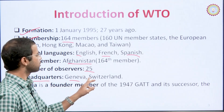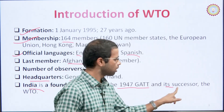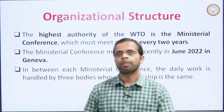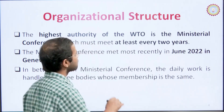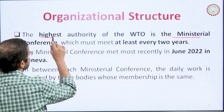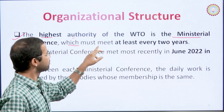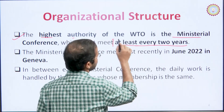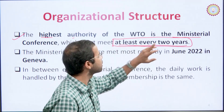WTO has an organizational structure. The highest authority of the WTO is the Ministerial Conference, which must meet at least every two years. This meeting is called the Ministerial Conference meeting.